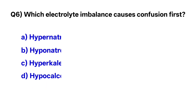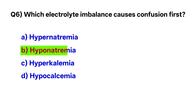Question number six: Which electrolyte imbalance causes confusion first? The correct option is B, hyponatremia.